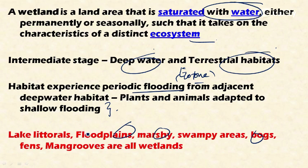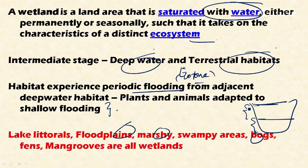The lake littoral is the marginal area between the highest and the lowest level of lakes. If this is the highest level of the lake and this is the lowest level, the zone in between is the lake littoral, which is the marshland.